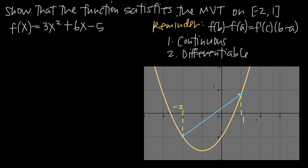The mean value theorem tells us that if this function is continuous and differentiable between x equals negative 2 and x equals 1, then there has to be some point — we call it c — somewhere between negative 2 and 1 where the tangent line to the graph is parallel to the line we already drew. So how are we going to find that point?